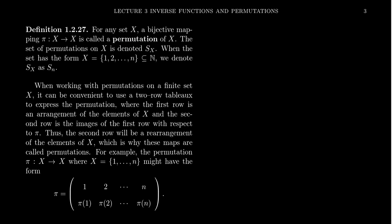The set of permutations on the set X we will denote as S sub X. In particular, if X is the set {1, 2, 3, 4, ..., n}, we would denote S of X simply as S sub n. It turns out that the exact elements themselves don't really matter — it's just the distinction between them. So the cardinality of the set X matters more than the actual elements.